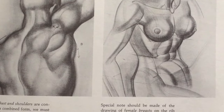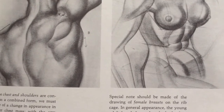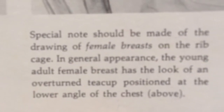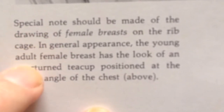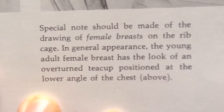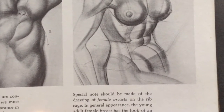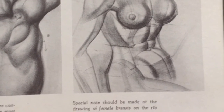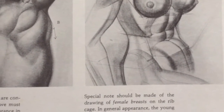So here we go again. We're going to be discussing female breasts and looking at Hogarth's figurative correlations. Special note should be made of the drawing of female breasts on the rib cage. In general appearance, the young adult female breast has the look of an overturned teacup positioned at the lower angle of the chest. This is excellent because I'm just as compelled by these breasts as I am by the abdomen, the shoulder, and I love these planes that are happening.